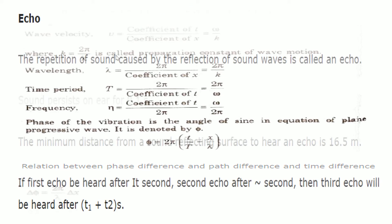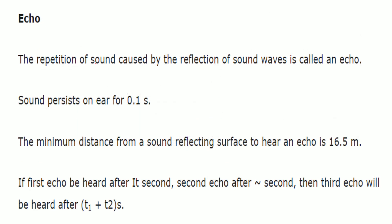Echo is the repetition of sound caused by the reflection of sound waves. You might have heard echo in a large room like an auditorium, or on a hill when you call out your name. Sound persists in air for 0.1 seconds. The minimum distance from the sound source to the reflecting surface to hear an echo is 16.5 meters. The third echo is heard after t1 + t2 seconds.